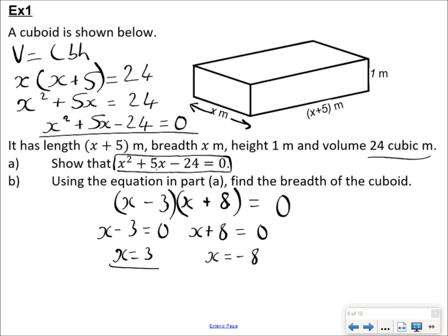It tells you to find the breadth singular, but I've got two values for x — and this is where you have to use your common sense. Because x is a dimension, it can't possibly be negative. So you say x cannot equal −8; x has to be greater than 0. Therefore x = 3. You've got to explain why you're discarding x = −8 — it makes no sense. That's you interpreting your solutions. Construct, solve, interpret.